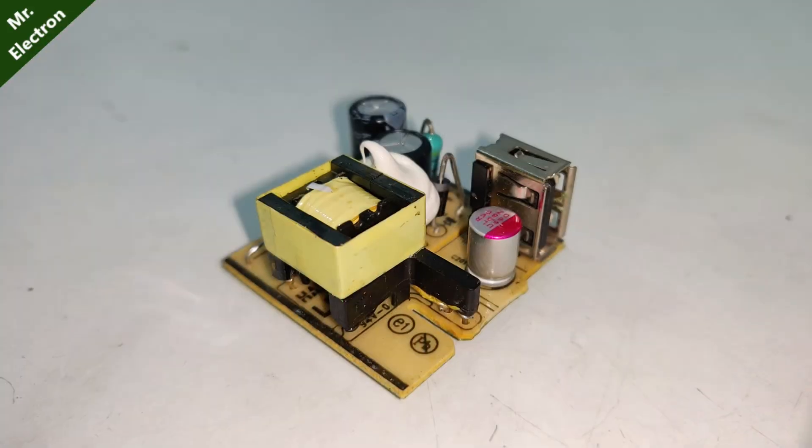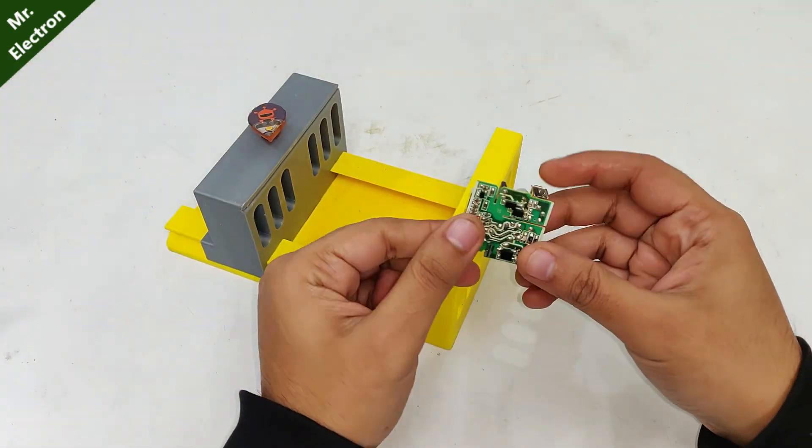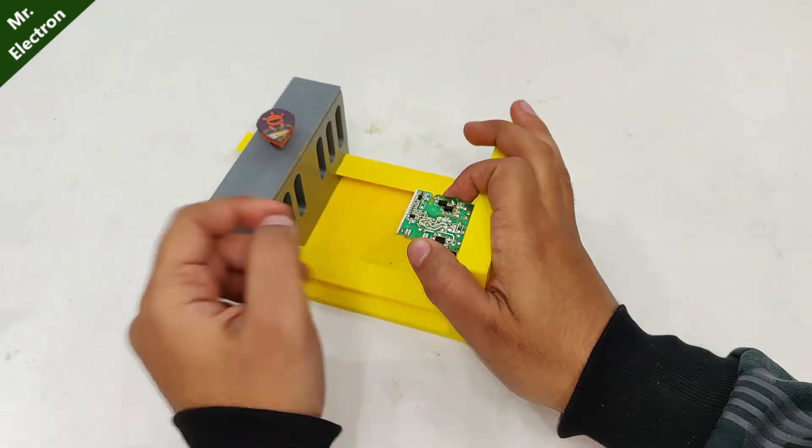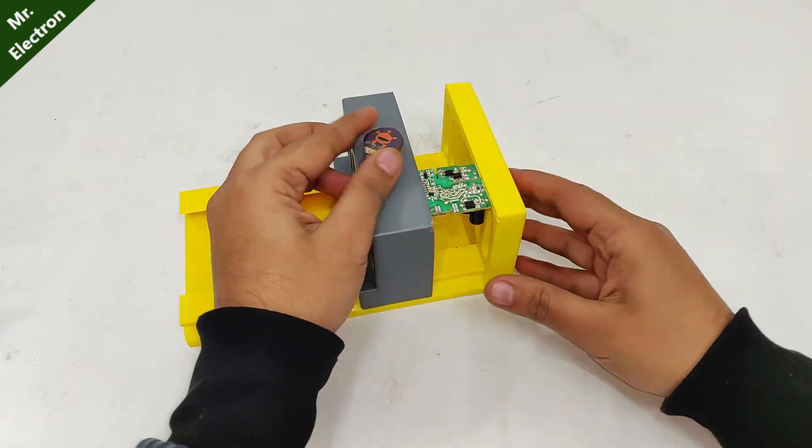Now this what you see is a mobile charger circuit which I'm going to install in my power station for charging mobile phones.